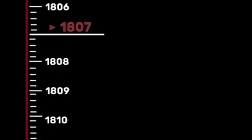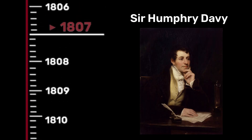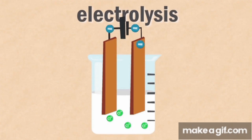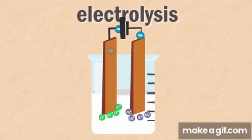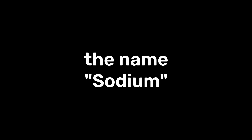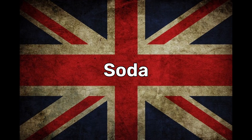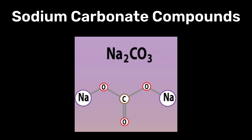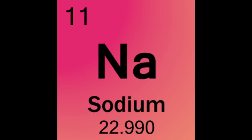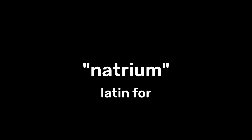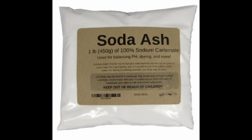Sodium was first isolated in 1807 by the English chemist Sir Humphrey Davy, who used electrolysis to separate it from sodium hydroxide. The name sodium comes from the English word soda, a term historically used to describe sodium carbonate compounds. The element symbol Na derives from natrium, the Latin name for soda ash.